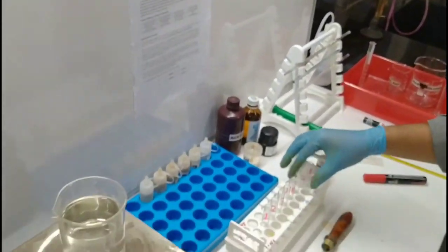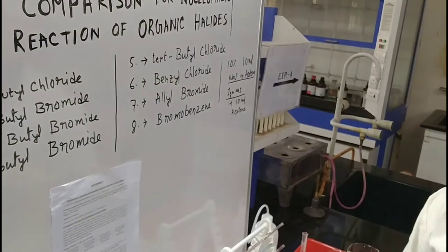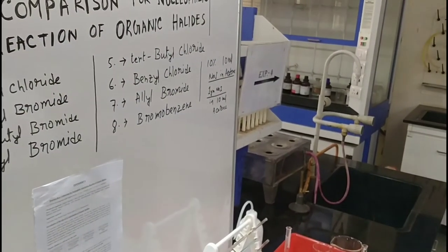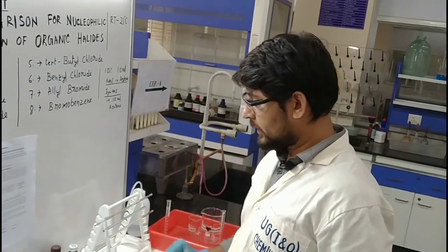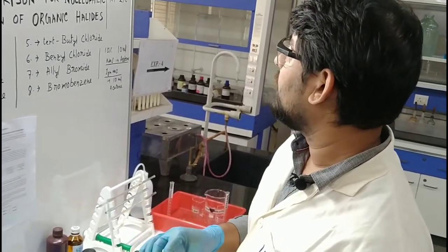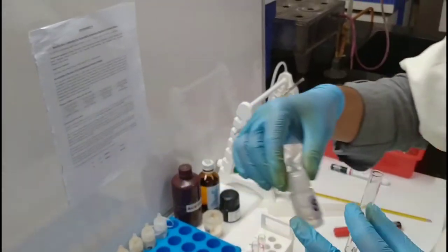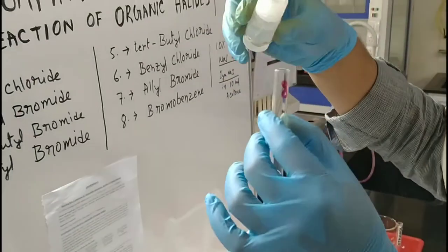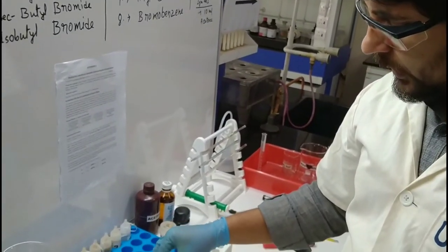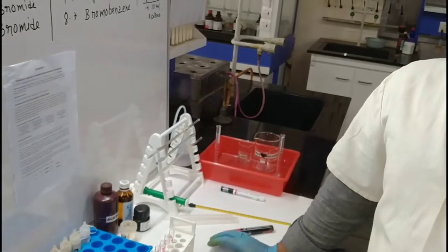The last one is the 8th — bromobenzene. Bromobenzene is not reactive for substitution reaction, so I think the 8th test tube should not give any precipitation. Let's try — I am going to add this one and keep it. Now we are going to start the preparation of the SN1 reaction.